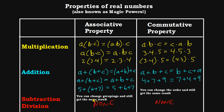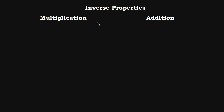Go ahead and add the formal definitions of associative and commutative properties to your notes. Now let's talk about inverse properties. For multiplication, if we have A and multiply it times 1 over A, we get 1. This 1 over A is known as the multiplicative inverse of A.